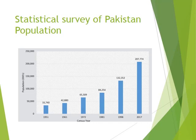The population of Pakistan: in 1951 it was 33,740; in 1961 it was 42,880; in 1972 it was 65,309; in 1981 it was 84,254; in 1998 it was 132,352; and in 2017 it was 207,774. This is the survey of Pakistan's population — this is statistical data presented in numerical combined form.